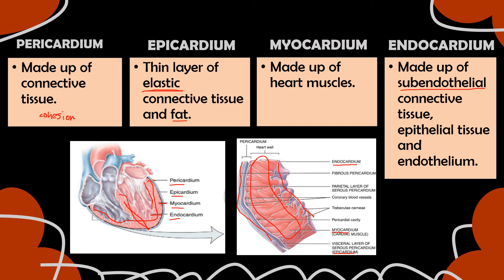The epithelial tissue serves its purpose of protection, secretion, absorption, excretion, and filtration. And the endothelium controls the vascular relaxation and vascular contraction of the chambers. As we know, the work of the chambers is to contract and relax. So in order to control and regulate it perfectly, the endothelium helps in controlling vascular contraction and relaxation.